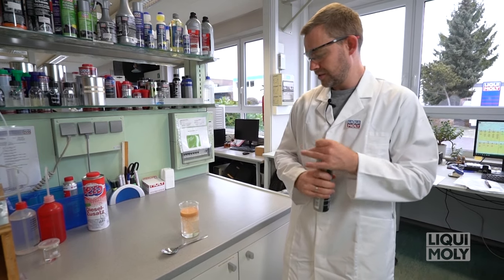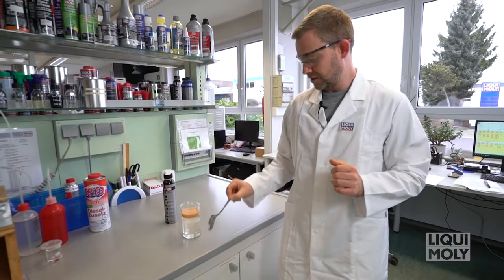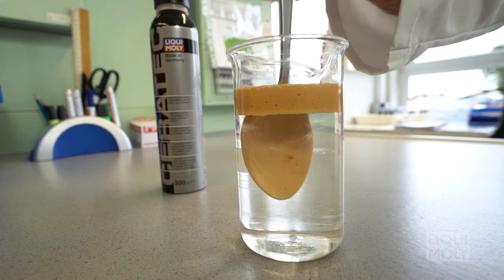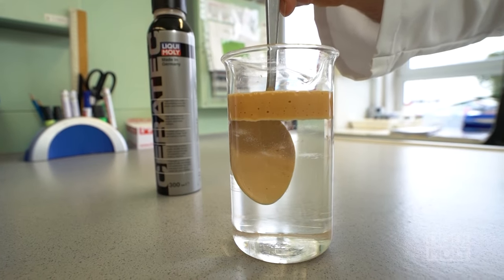Now you can see it forms two layers which separate immediately. As you can see, the oil transports the ceramic particles to the metal surface.